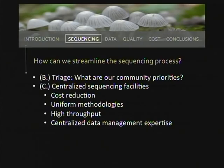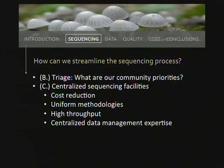Another way to streamline a large microflora sequencing project is to do a little triage as a community — figure out what our priorities are. The current state of balkanization in sequencing is probably doing more harm than good. If we got together and figured out what the most important things to sequence for the microflora are, we'd save time, effort, and money. And as Tom mentioned, centralized sequencing facilities would allow us to reduce costs, use uniform methodologies, achieve high throughput, and centralize data management.